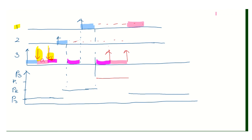Once task one finishes critical section A, it executes one more normal priority task and completes all its work. After task one is done, task two finally gets its chance — it has been waiting a long time to access critical section B. Task two accesses critical section B, followed by its normal execution, and then finishes. All tasks have now been executed — this is how the priority inheritance protocol works.